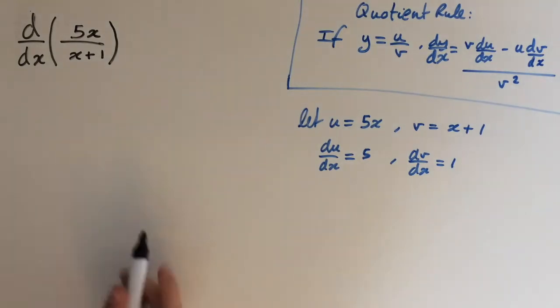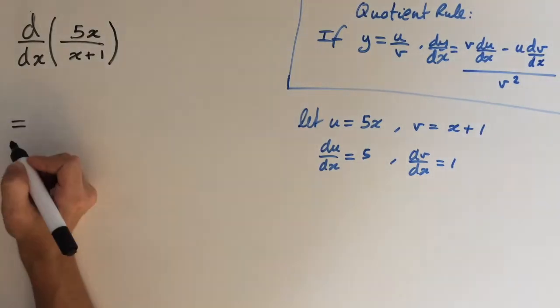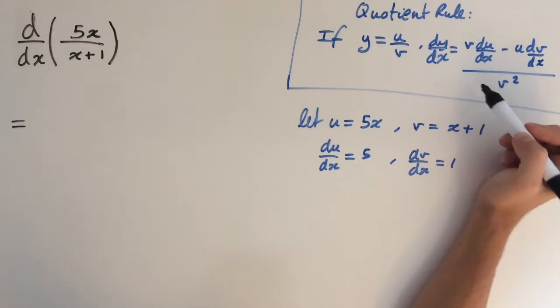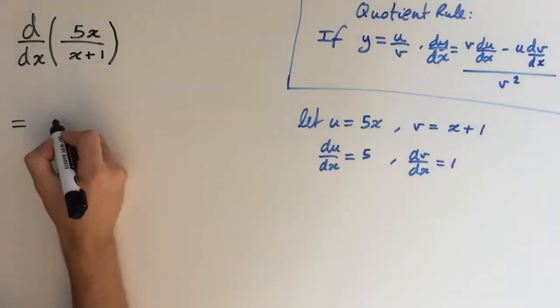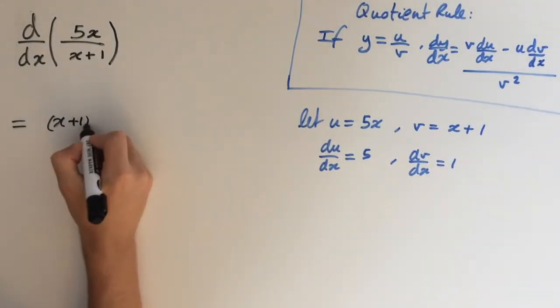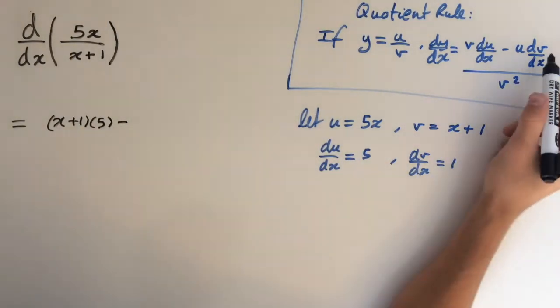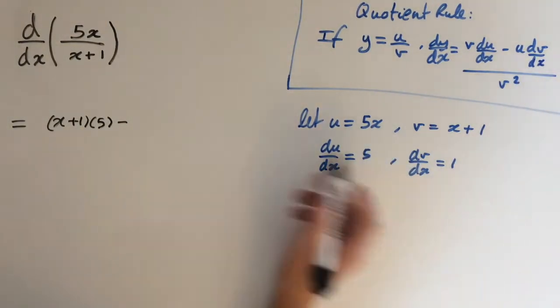So let's set this back into the formula. This is going to give us v times du/dx, so x plus 1 times 5, minus u dv/dx, so 5x times 1.